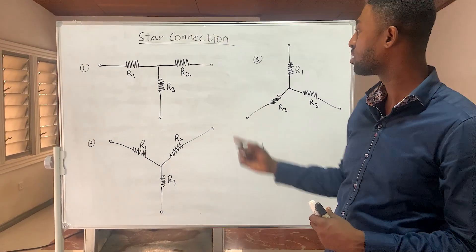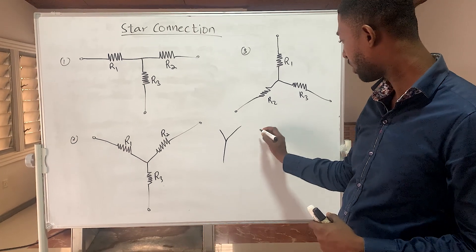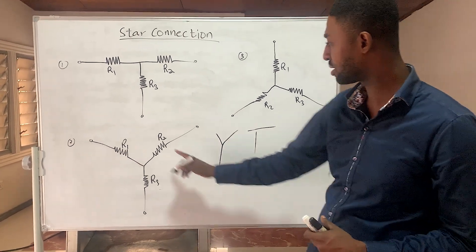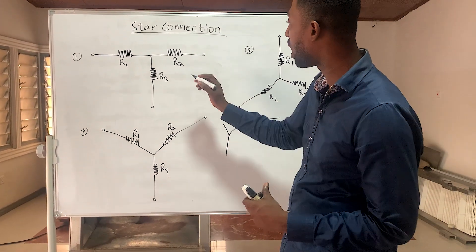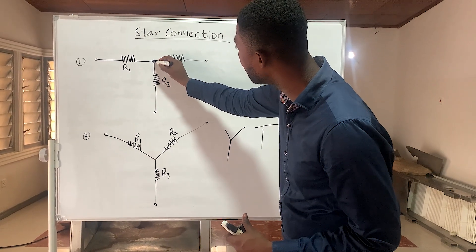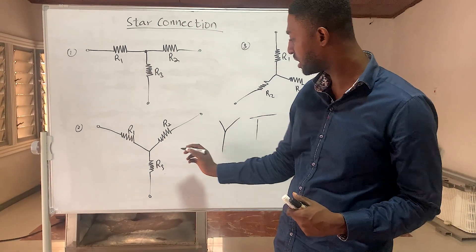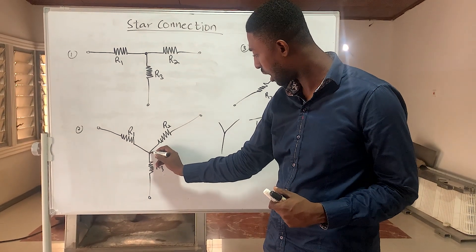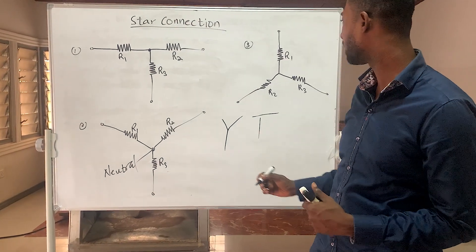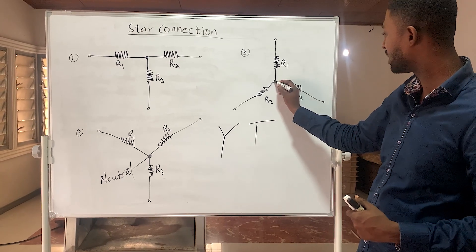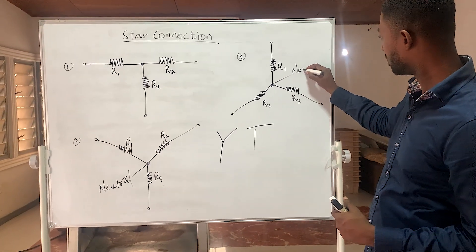For star connections, this is how a star connection looks like — they normally take the shape of Y or T. Resistors are connected in star if they all have a common point. So for the T shape, R1, R2, and R3 are all meeting at a common point. For the Y shape, they are still connected in star because they all meet at a common point, which is called the neutral point.